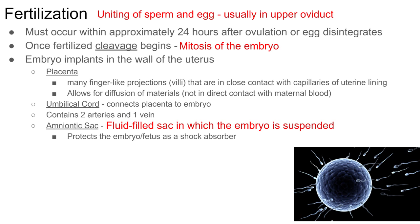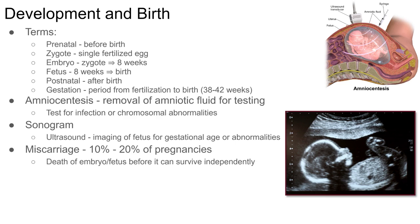The placenta starts to form, an umbilical cord grows to connect the embryo to the placenta, and an amniotic sac forms around it, filling with fluid that helps cushion the embryo as it develops. Key terms: prenatal means before birth. The first cell is called a zygote; once it divides we use the term embryo; after eight weeks we use the term fetus.